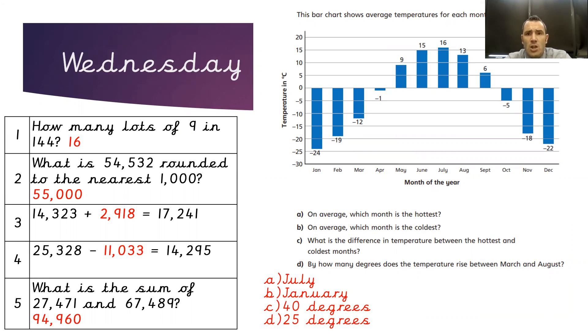So to answer the reasoning question, we have to look at the information that's contained within the bar chart. On average, which month is the hottest? To work this out, we'd need to find the bar that goes highest up the chart. So in this case, it's July with 16 degrees.